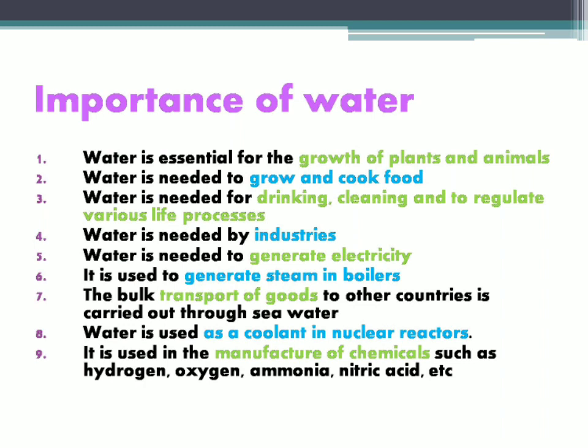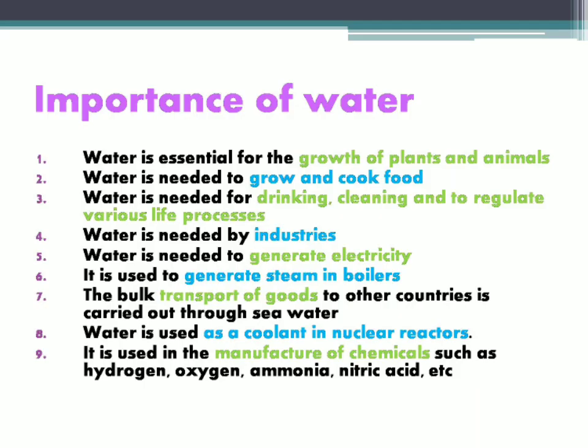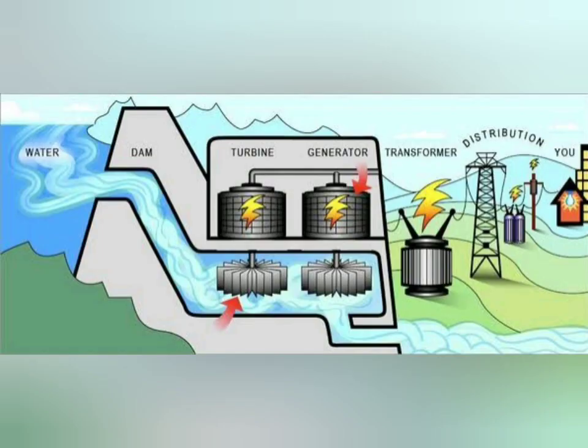Water is also needed by industries for various purposes — it is used to generate steam in boilers, it is used as a coolant in nuclear reactors, and water is used in the manufacture of chemicals such as oxygen, nitric acid, hydrogen, ammonia, etc. It is also used to generate electricity.